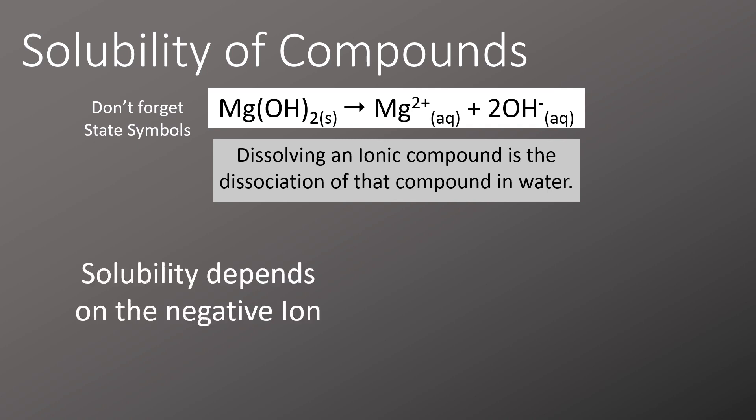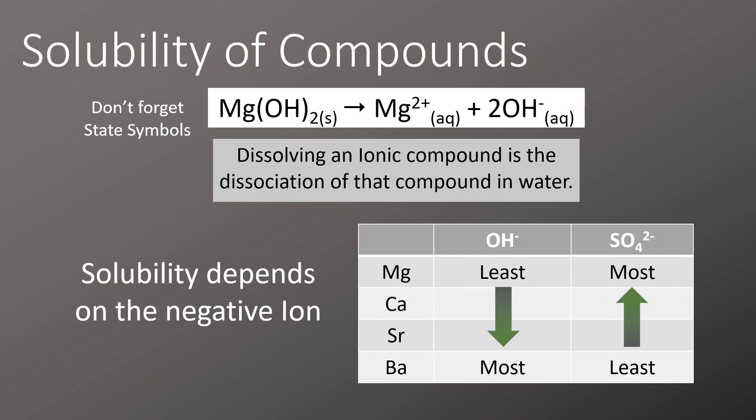The solubility of an ionic compound like the compounds from group 2 elements depends on the negative ion of the compound. In this case, we've got magnesium hydroxide being one of the least soluble whereas magnesium sulfate is one of the most soluble, running all the way down to barium hydroxide being one of the most soluble and barium sulfate being one of the least soluble.